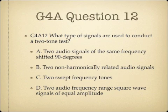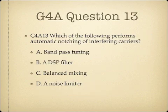Question 12: What type of signals are used to conduct a two-tone test? A, two audio signals of the same frequency shifted 90 degrees; B, two non-harmonically related audio signals; C, two swept frequency tones; or D, two audio frequency range square wave signals of equal amplitude. Question 13: Which of the following performs automatic notching of interfering carriers? A, band pass tuning; B, a DSP filter; C, balanced mixing; or D, a noise limiter.